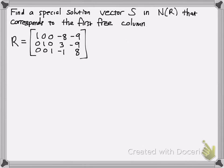So the directions say: find a special solution vector s in null space of R that corresponds to the first free column. First, let's figure out where the first free column is. That would be where the first red line is — that column right there: negative 8, 3, and negative 1. As you can see, we have the identity matrix on the left. Each 1 represents a pivot for each row. Since each row has a pivot, the columns that don't have a pivot in them are free columns. Those are the two free columns on the right, since there are no pivots in those columns.